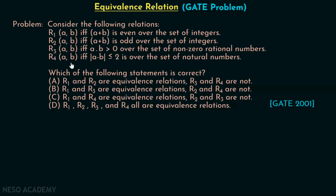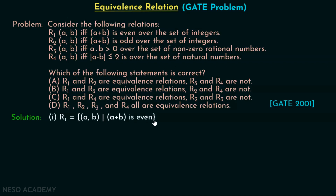Let's move on to the solution. R1 is the set of all ordered pairs (a, b) such that a plus b is even, defined over the set of integers. We have to identify whether R1 is an equivalence relation or not. Looking at the options, we need to determine which of these relations are equivalence relations.